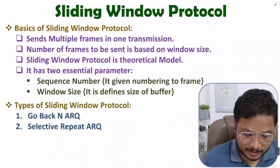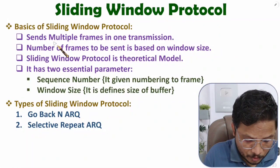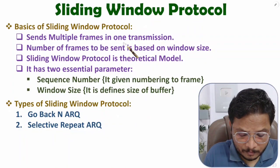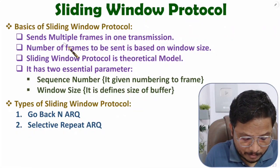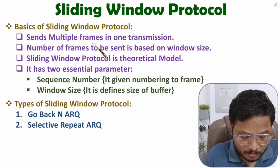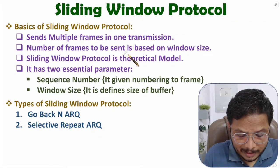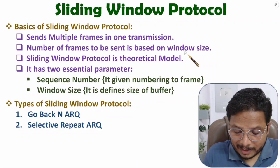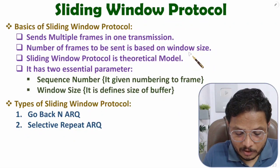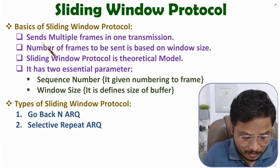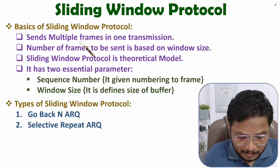In sliding window protocol we can send multiple frames in one transmission — in a single go we can have transmission of multiple frames. The number of frames to be sent is based on window size. I'll show you practically how window size works and how we will have transmission with sliding window protocol. The key point is that with sliding window protocol we can have multiple frames transmission based on window size.